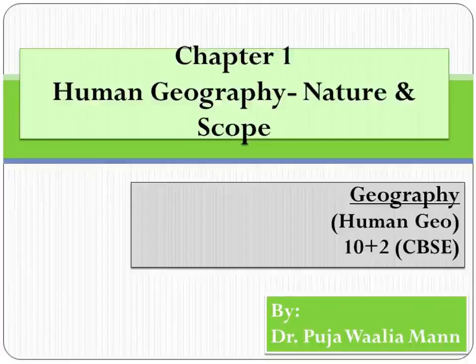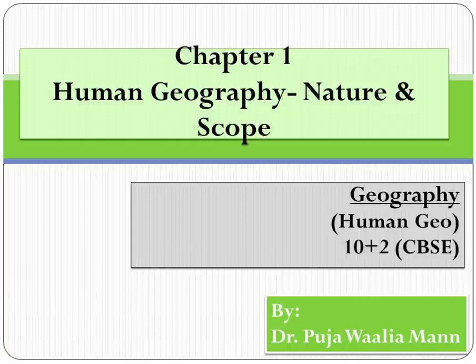Hello everyone. In this video we shall discuss the first chapter of the Human Geography book, Class 12th CBSE. The chapter is the Nature and Scope of Human Geography. Let us start our understanding of the chapter by first understanding the meaning of geography and the meaning of human geography.